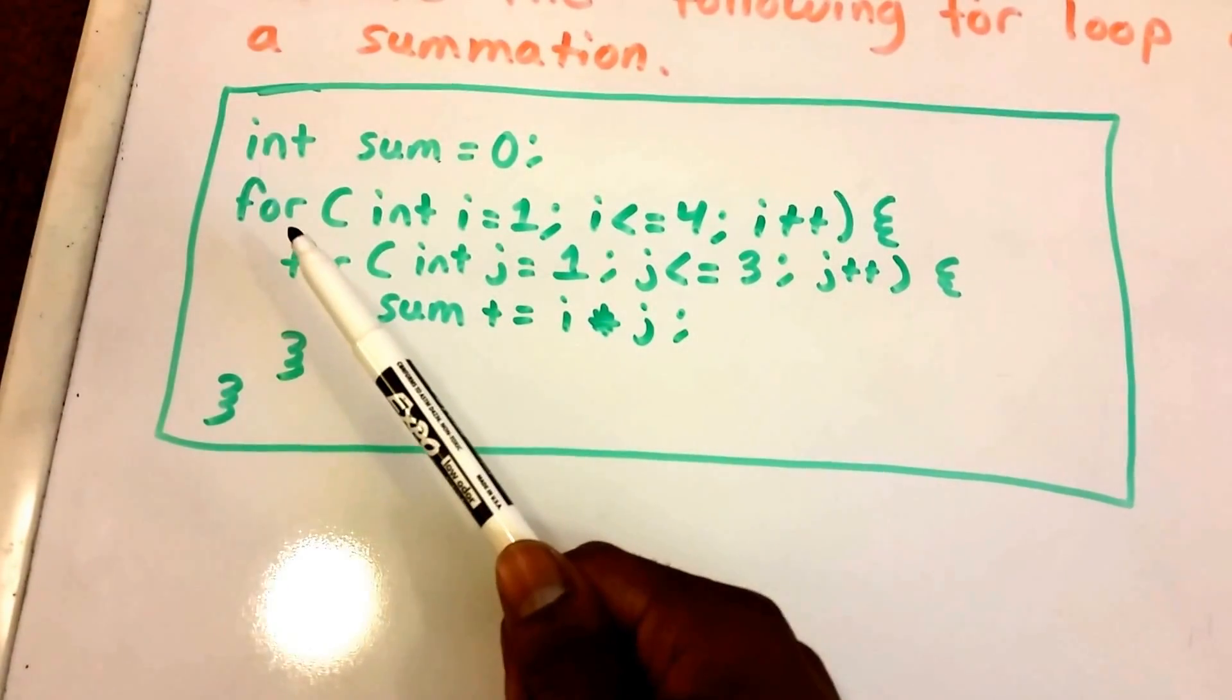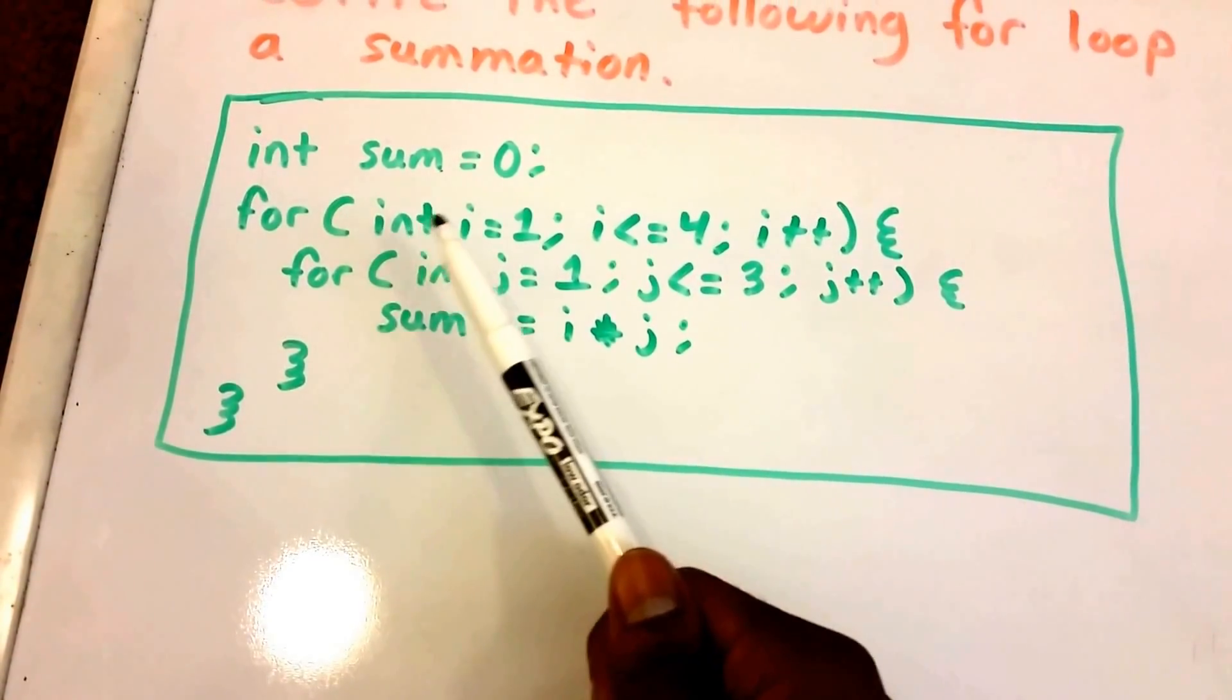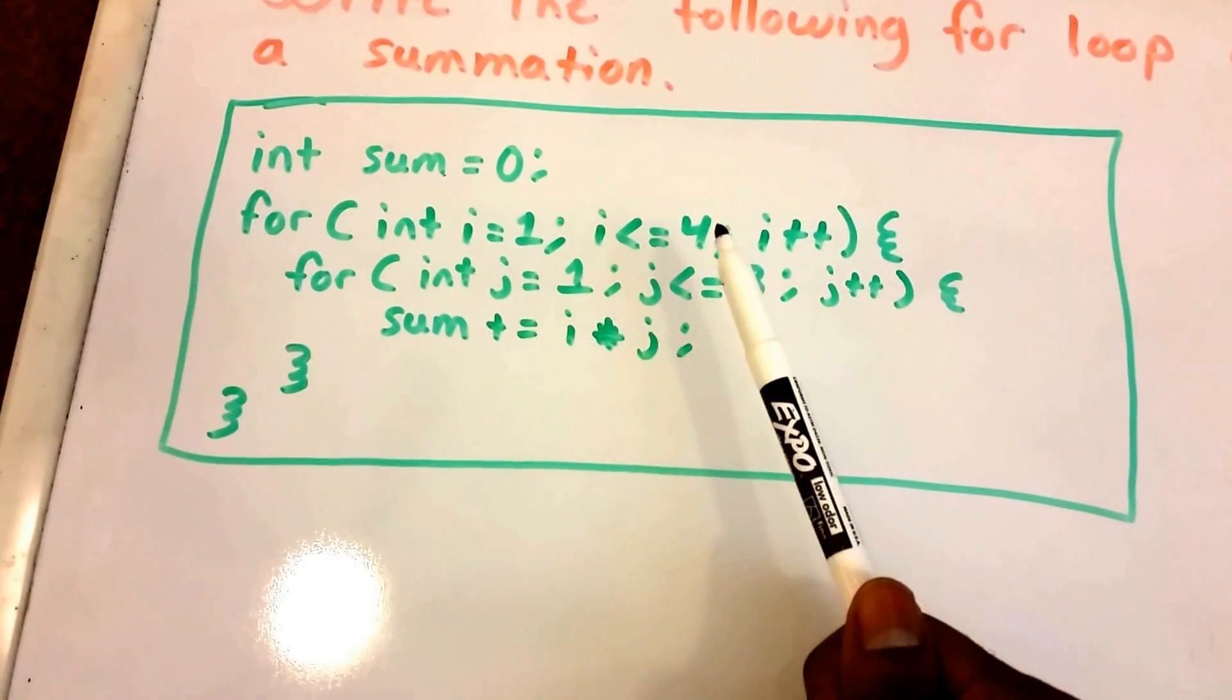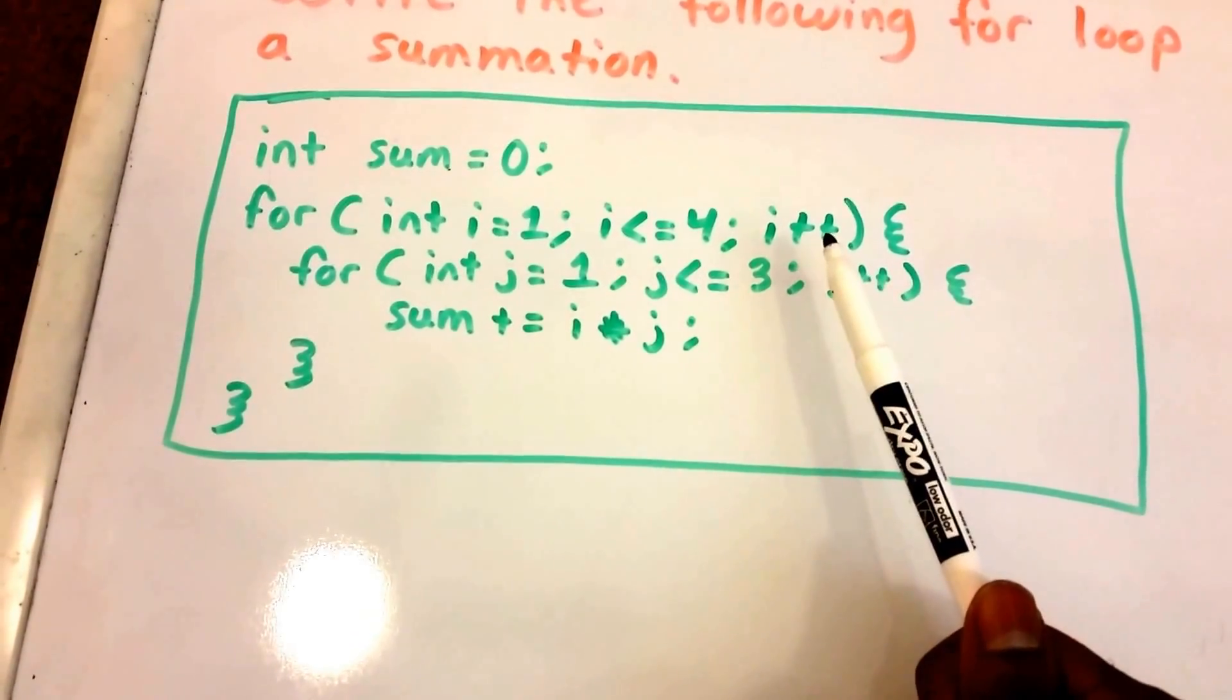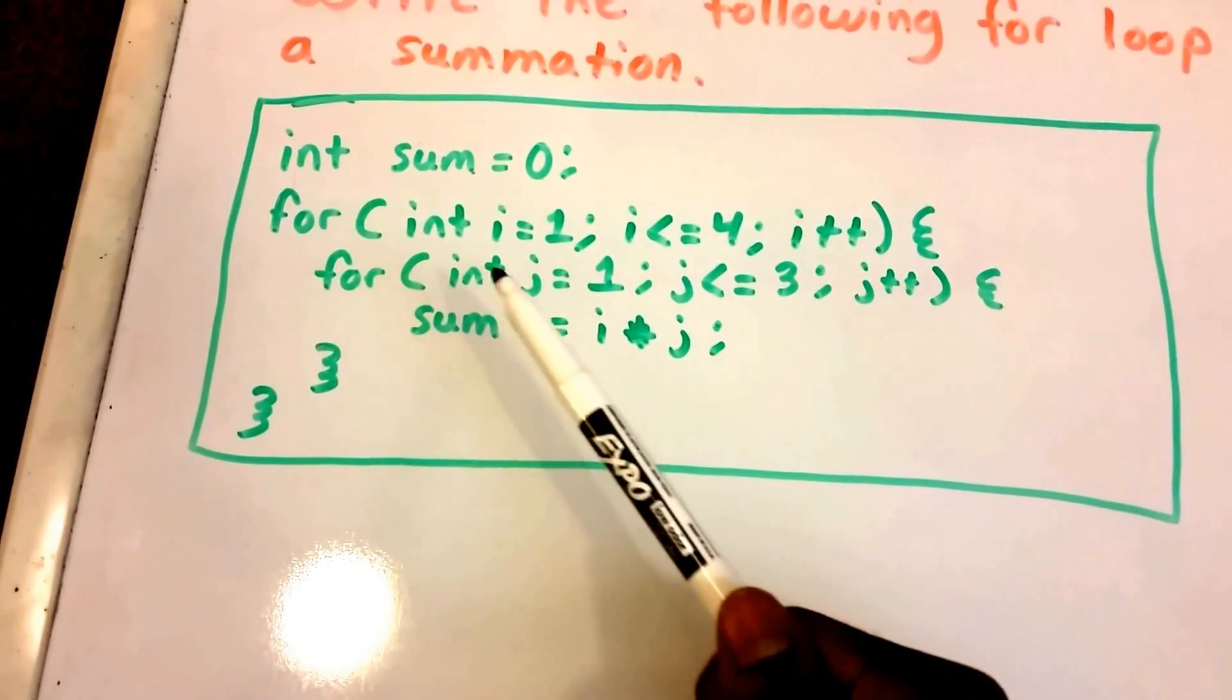Then we have our first for loop and it says for integer i equals 1, it's going to run while i is less than or equal to 4, and it's going to increment i by 1 each time.